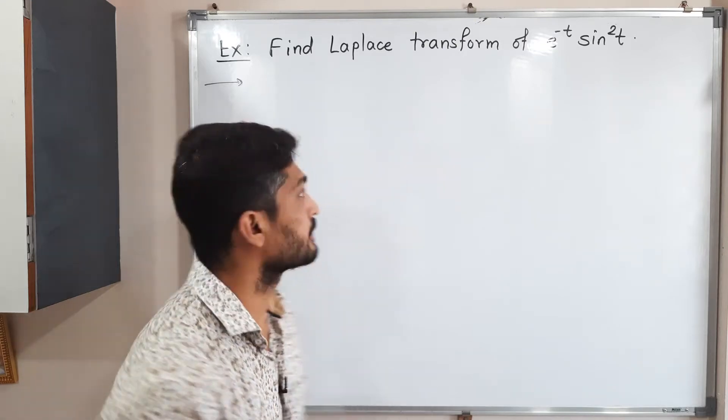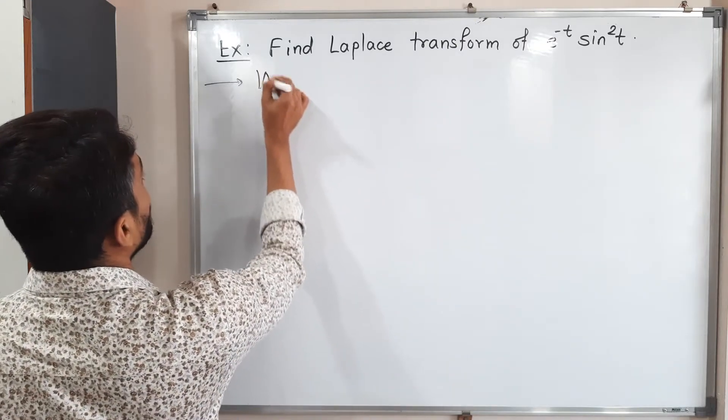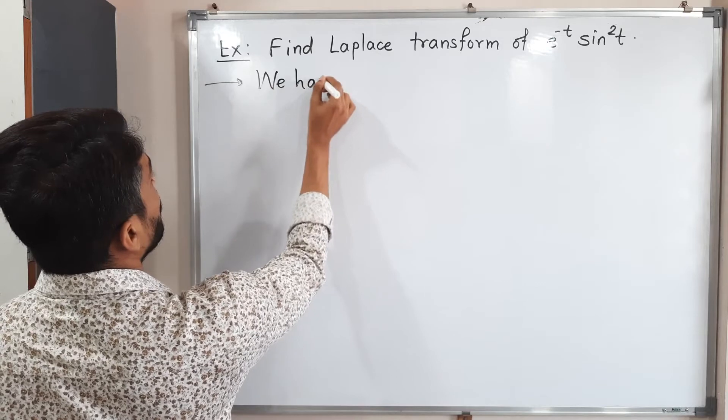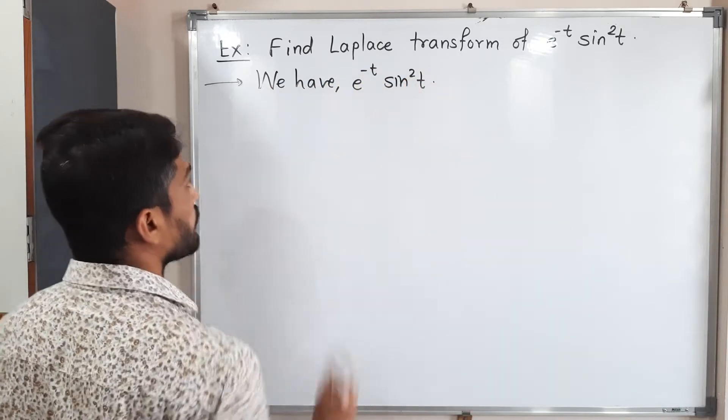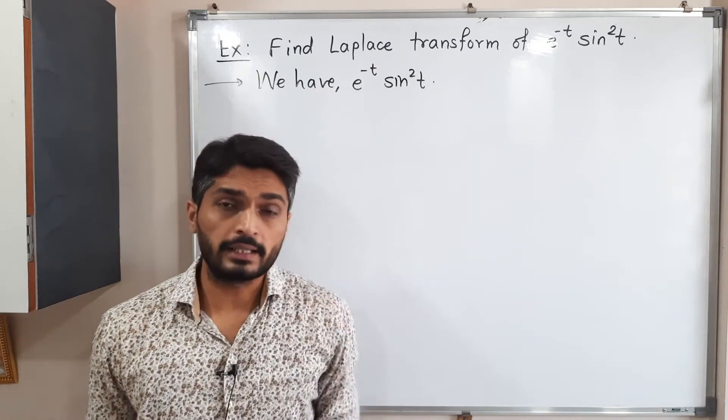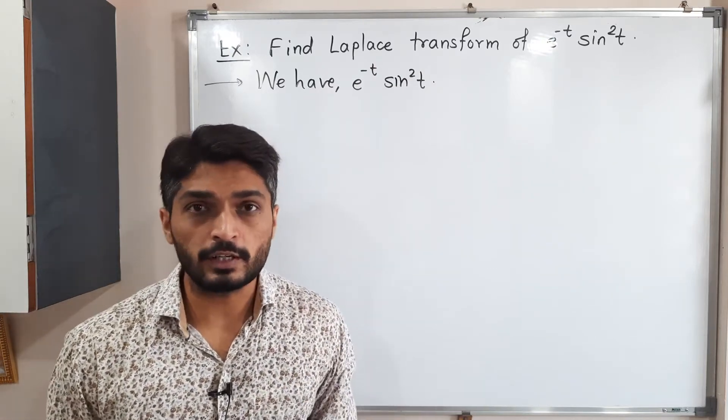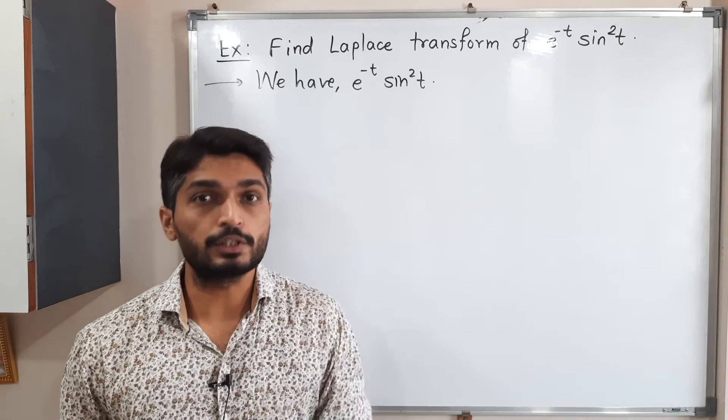Let us write the given function first. We have e raised to minus t sine square t. It is fixed in our mind that when exponential function is there, obviously we have to go for first shifting theorem.